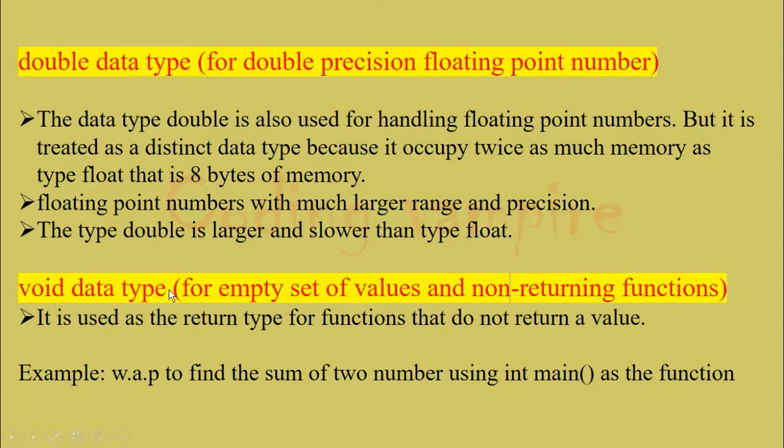Void data type for empty sets of values and non-returning functions: It is used as the return type for functions that do not return a value. So we will move on to this example problem: write a program to find the sum of two numbers using int main as a function.